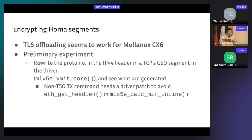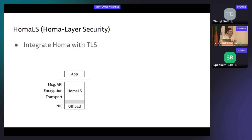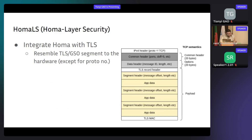Now that we know how the hardware will handle things, we have proposed HOMA-LS, which closely integrates HOMA with TLS. With HOMA-LS, it unifies all three parts including message API, encryption, and transport protocol. In this way, we can make use of NIC offloading — not only TSO, but also TLS offloading.